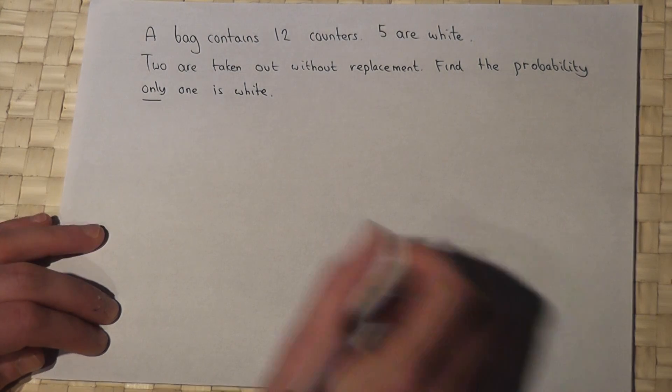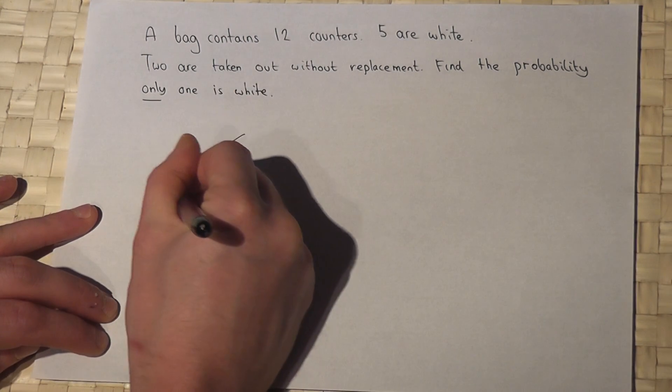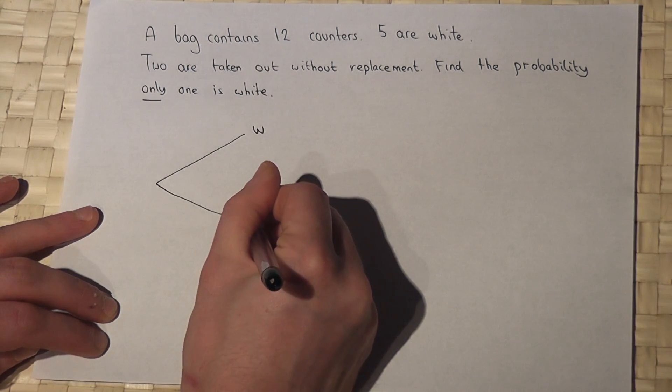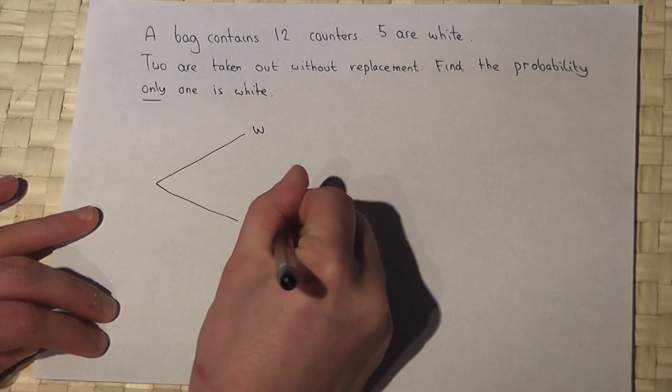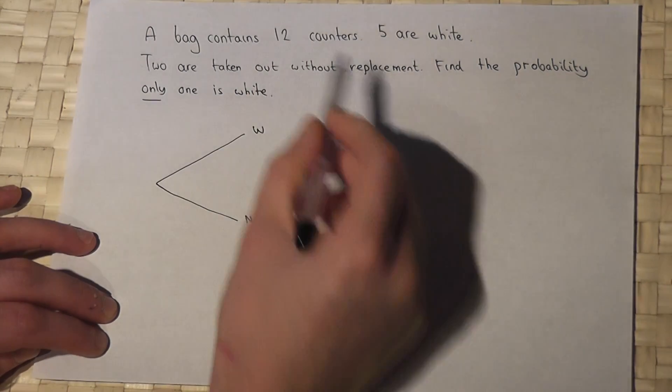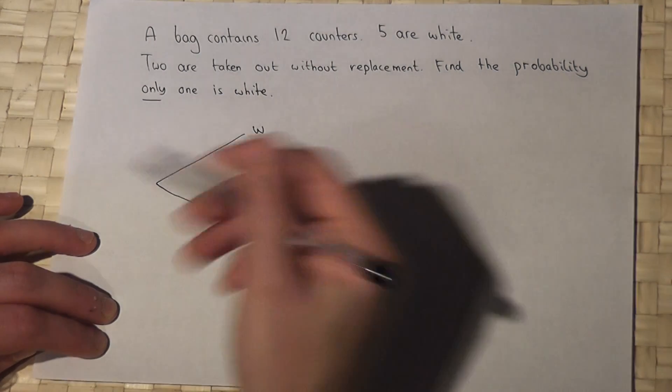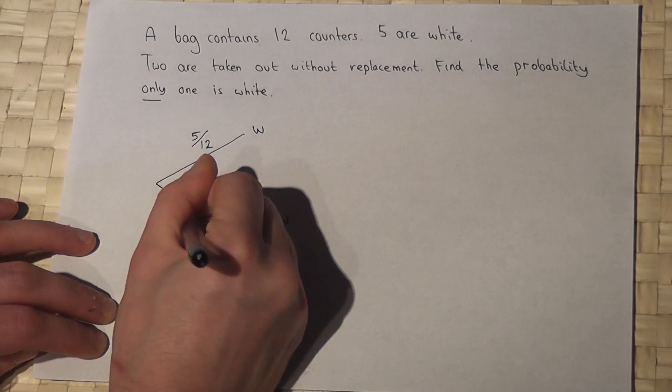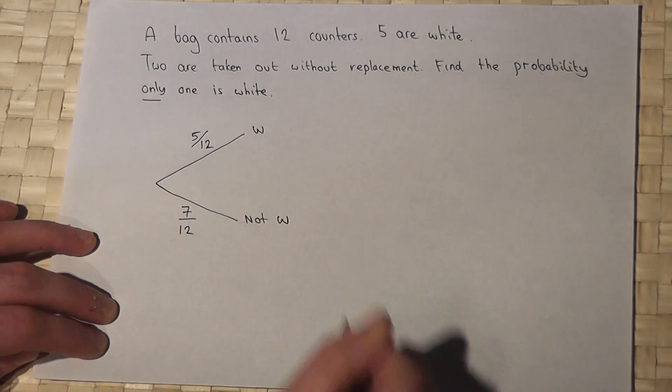For the tree diagram, when you first go into the bag for the first counter, it's either white or not white. Of the 12 in the bag, five are white, so 5 out of 12 are white and 7 out of 12 are not white.